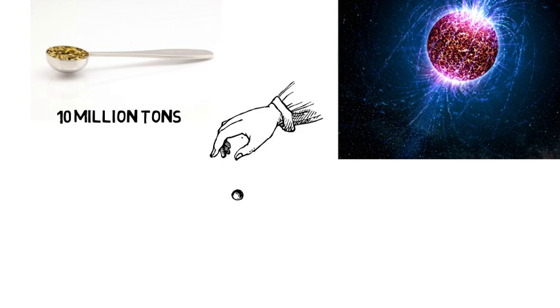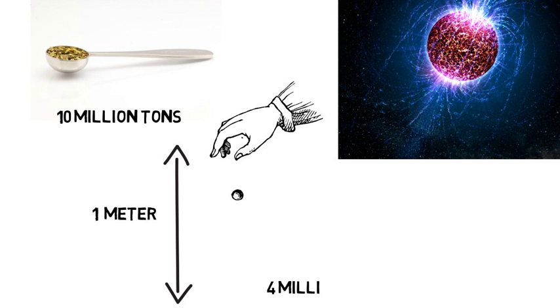If an object is dropped one meter from the surface of a neutron star, by the time it would hit the ground, it would have a speed of around 4 million miles per hour, and that would happen in around a microsecond.